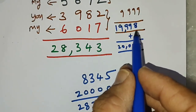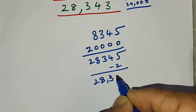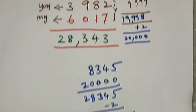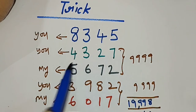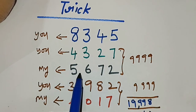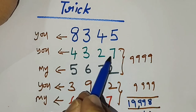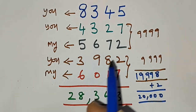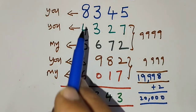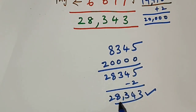So I simply added 20,000 to 8345, giving 28,345. But since I am adding 2 extra when I do 9999+9999 instead of 19,998+2, I subtract 2, giving 28,343. That is the secret! I am effectively adding 20,000 and subtracting 2. You can also think of it as: each of my numbers is formed by subtracting each digit of your number from 9, making our paired totals always equal 9999.